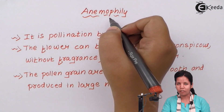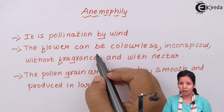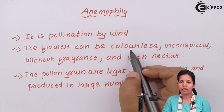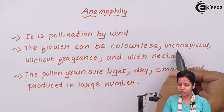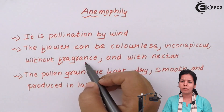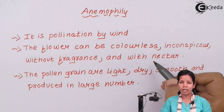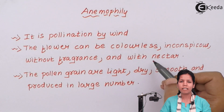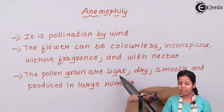For anemophily, or pollination by wind, the requirements are that the flower has to be colourless. Obviously, the colour of the flower won't affect the wind. Even small flowers would work. The flower can be with or without fragrance — fragrance doesn't matter. There is no need for nectar, since during wind pollination there is hardly any honey bee, insect, or bird involved. The pollen grains should be light.